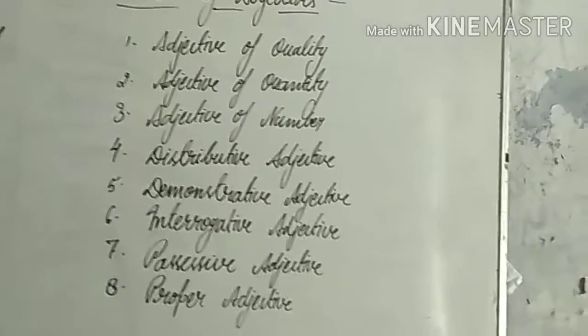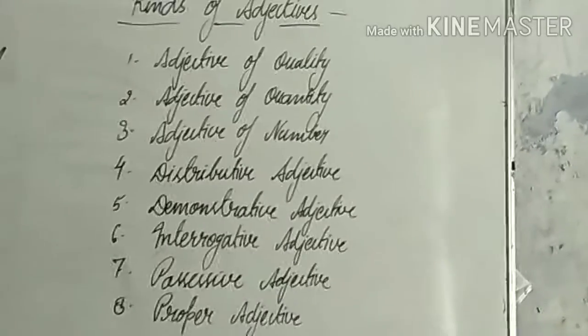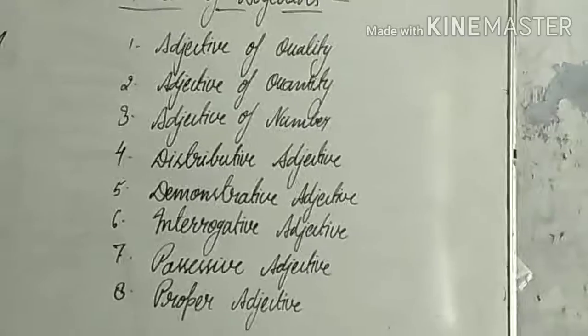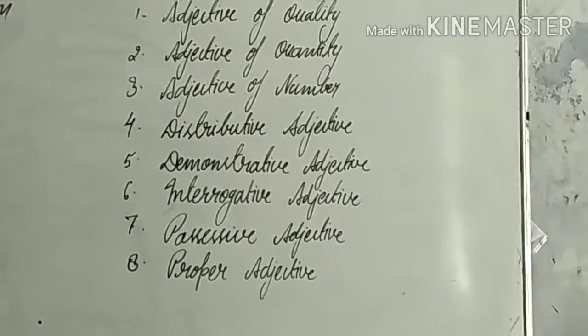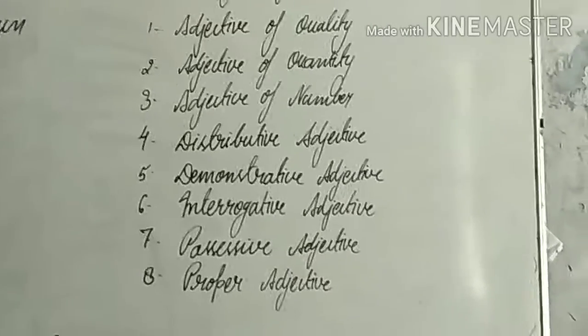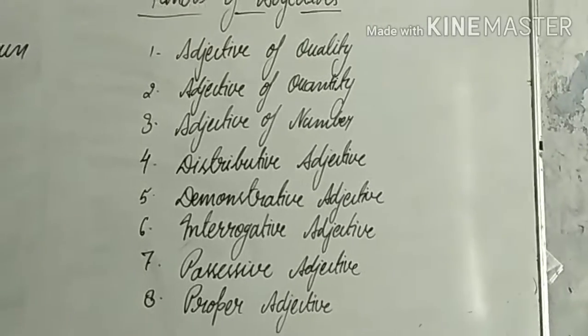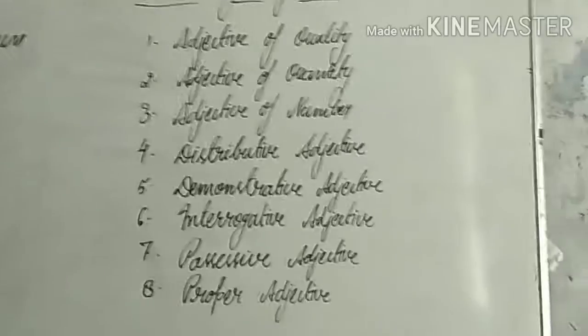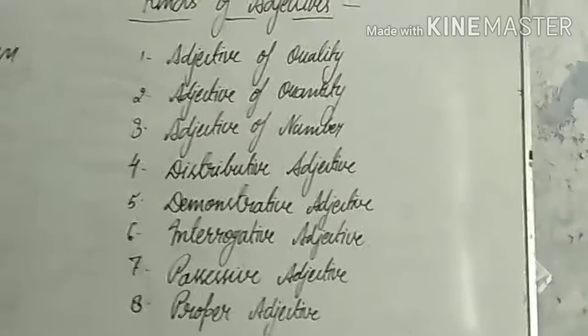Adjective of quality shows some quality of a noun or pronoun — words like smart, intelligent, short, tall. Adjective of quantity gives us the quantity or amount — words like some, few, little. Adjective of number shows the number — one, two, three, four, nine, ten.